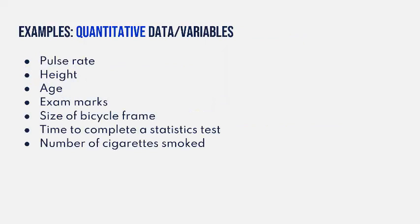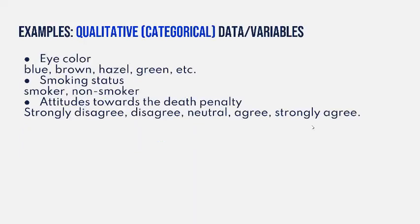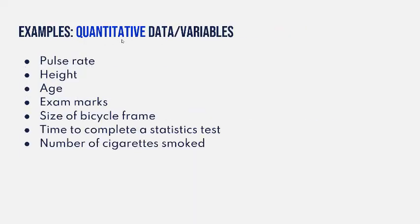Here are examples of quantitative data variables. Numerical measures. Your pulse rate, how tall you are, your age, what you get on a statistics exam, the size of a bicycle in your garage - not all bicycles have the same size, so that would be a difference, that's a numerical measure of how large it is. The time it takes you to complete a statistics test, or the number of cigarettes you smoked in a day. Those are all numerical measures.